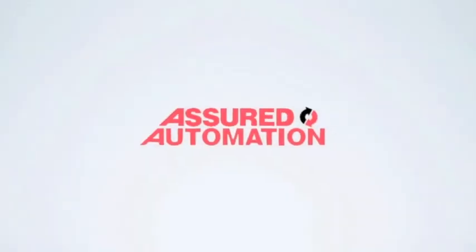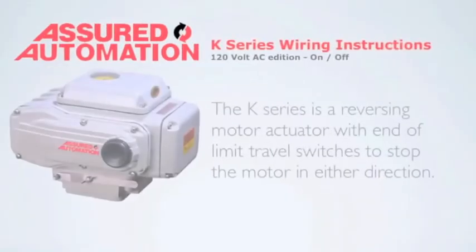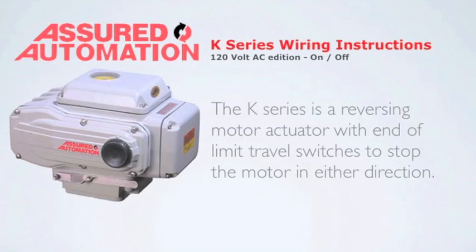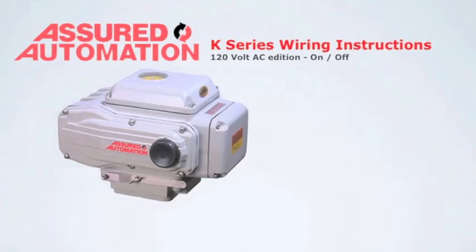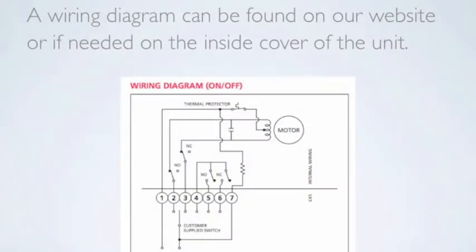This is the wiring instructions for the K-Series 120V AC Edition. The K-Series is a reversing motor actuator with end of limit travel switches to stop the motor in either direction. A wiring diagram can be found on our website or if needed on the inside cover of the actuator.